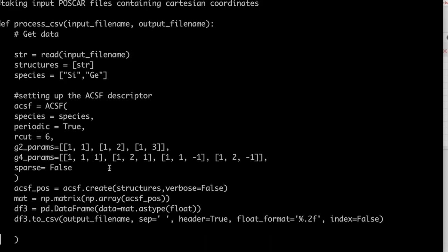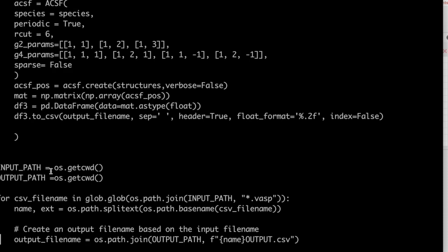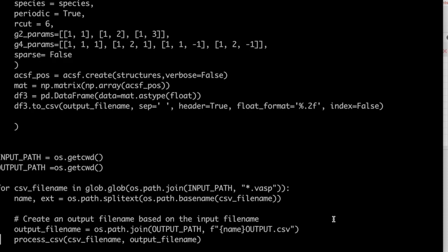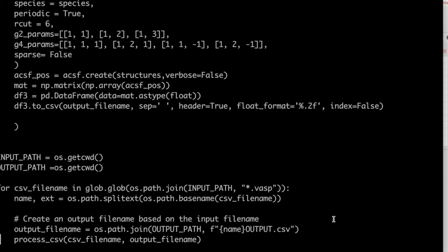And now G2 and G4 are ACSF specific parameters. You can find the link to their explanation in the comments below. Once ACSF parameters are defined for a given structure, we create a numeric matrix using ACSF.create command. Watch this video till the end to know more about G2 and G4. Now we convert this matrix to data frame and then write it in a CSV format with name output file name. Outside this function, location of input and output is defined. We use this last section to name the output file after the input file name and then call the function. I hope the basic structure of this code is understood. You can change these settings as per your choice.